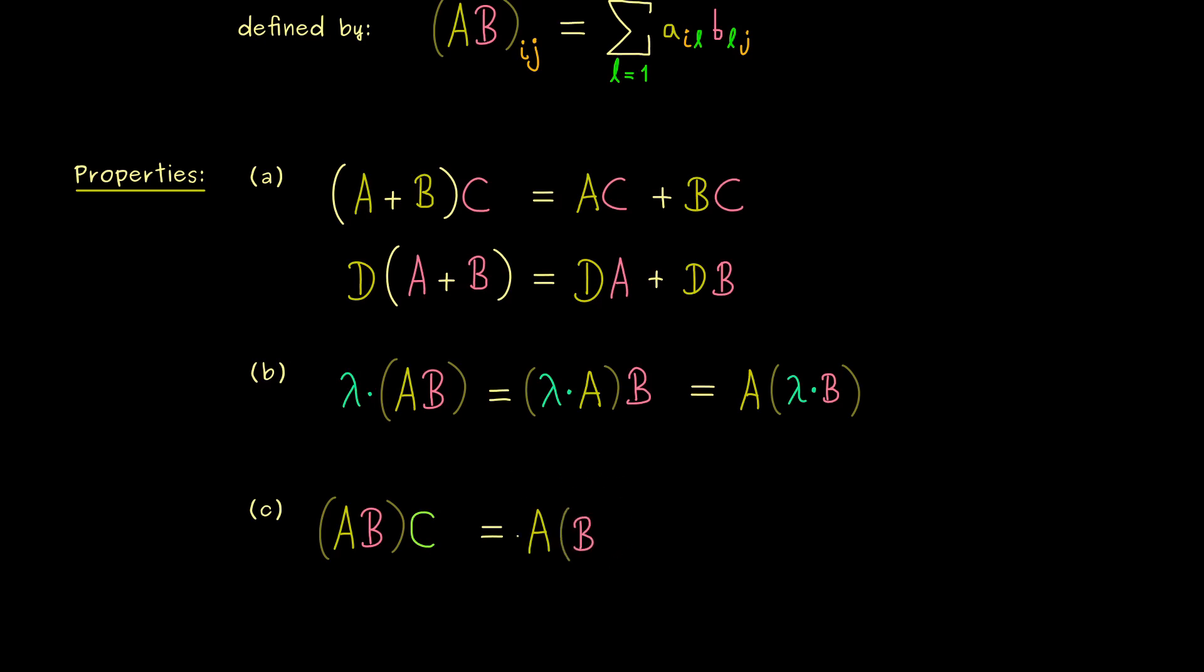So we have parentheses here to multiply b with c and then we multiply a from the left hand side. And there we have it, this is the associative law for the matrix multiplication.